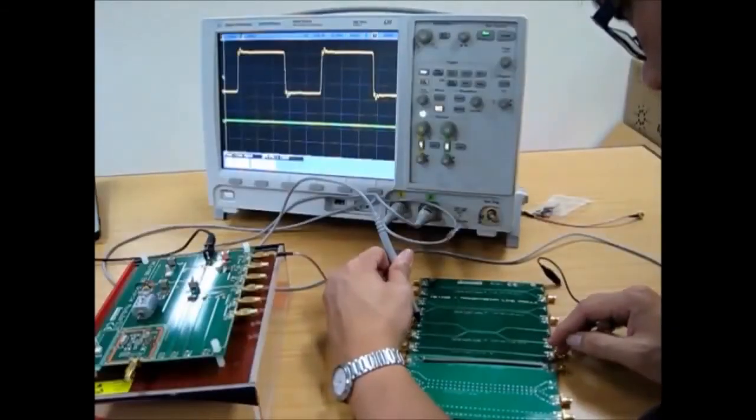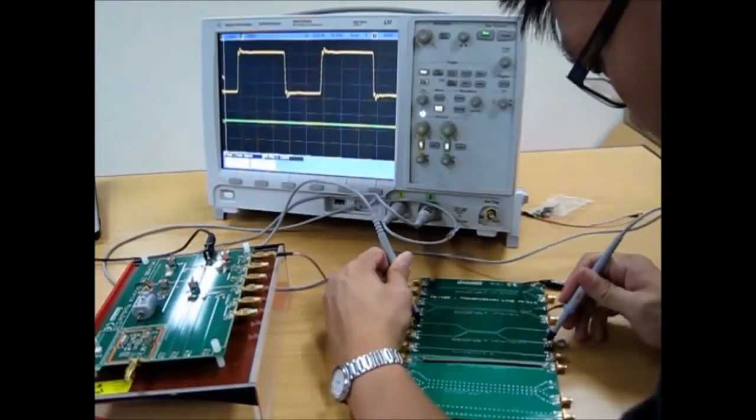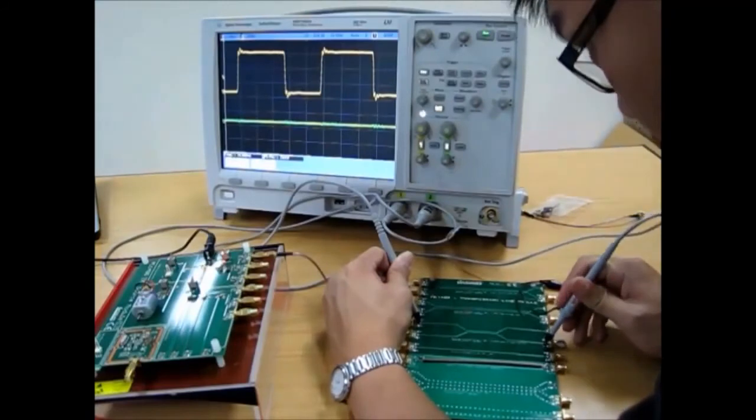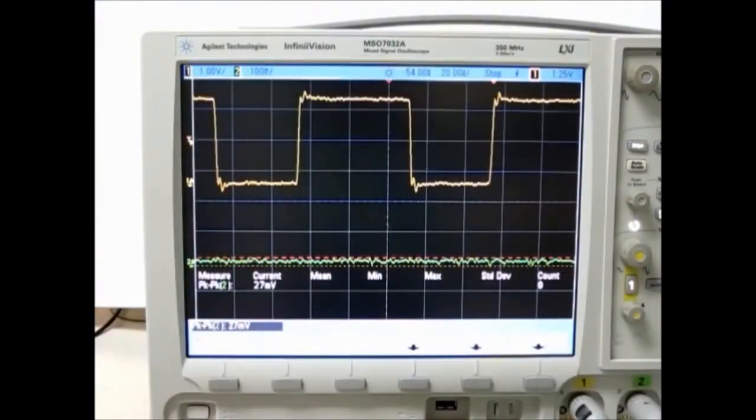Again, we are examining the far end crosstalk on this 50 mm coupled line for comparing with the 100 mm coupled line. The same phenomenon is also observed on the far end crosstalk, which is a much smaller spike level compared to the longer 100 mm coupled line.